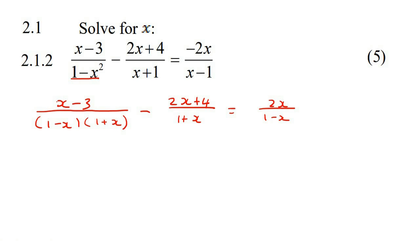So the reason we did that is now we have this, and this is the same, and this, and this is the same. So our lowest common denominator can just be (1-x)(1+x). So if you look at this one, what is it missing from the denominator? Well, nothing. It's got both of them, so that's good.